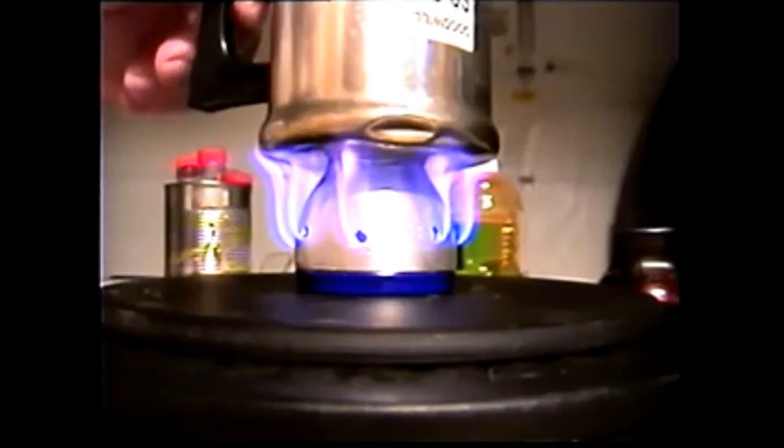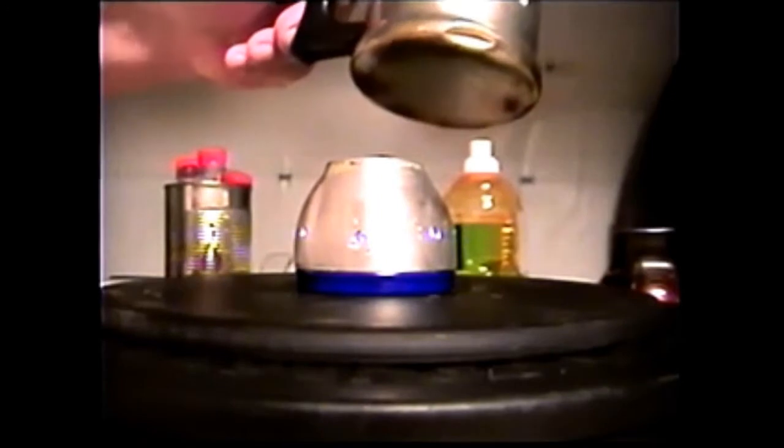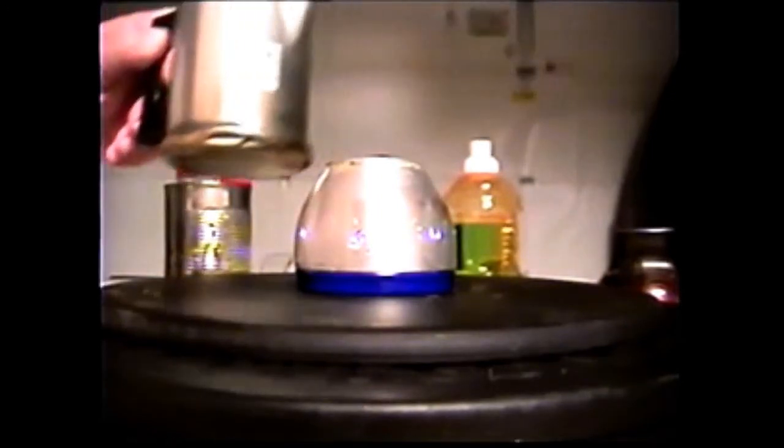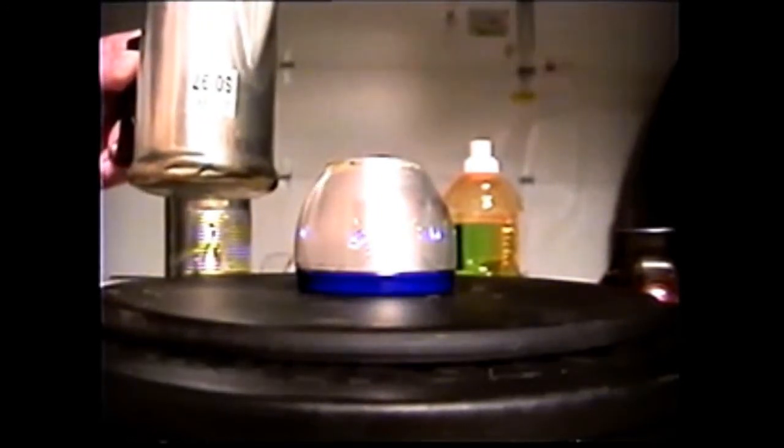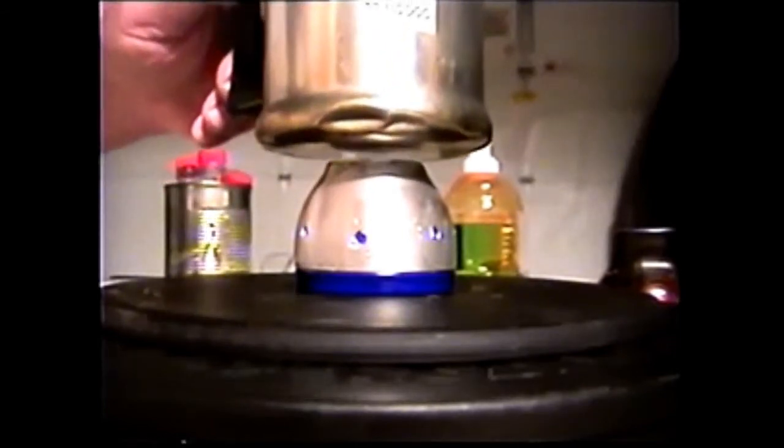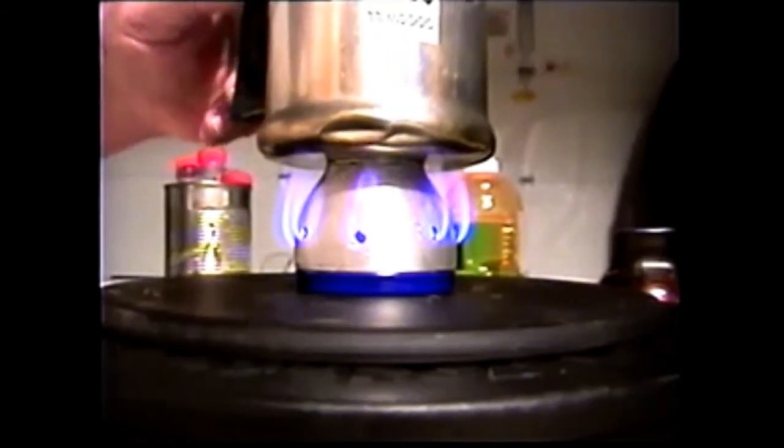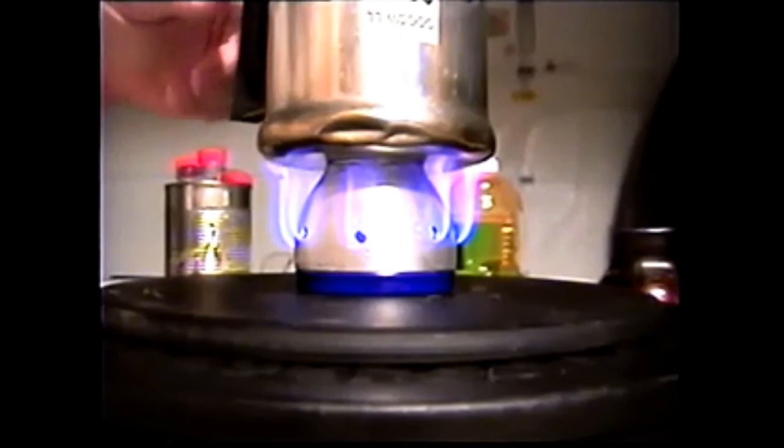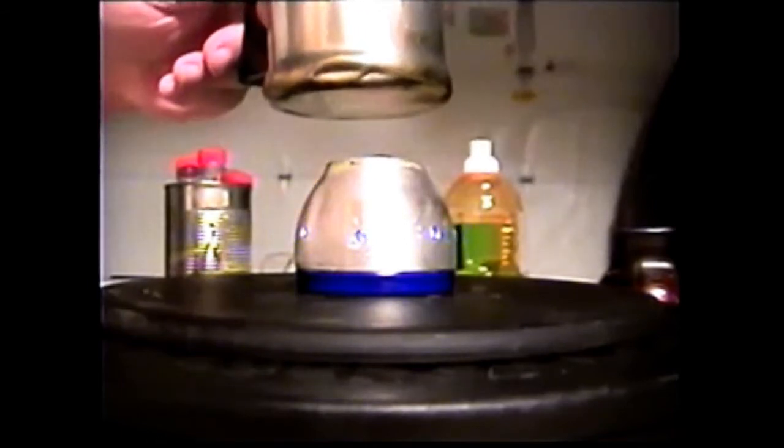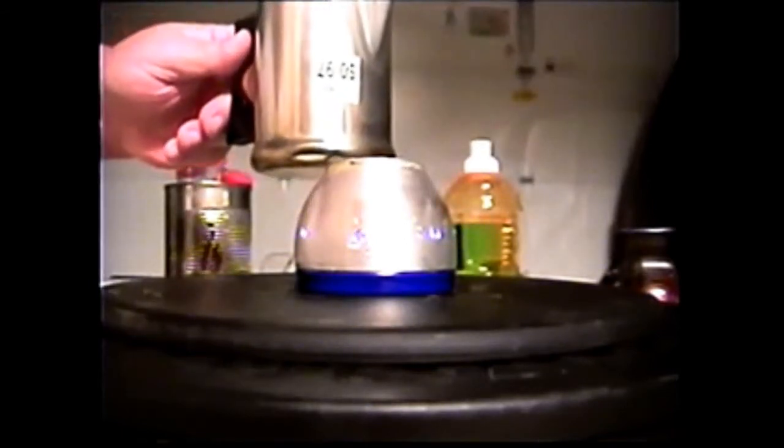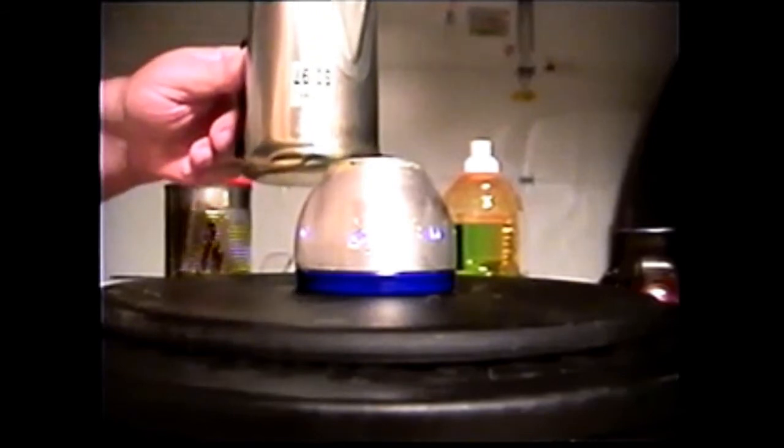Let's see if we get those vapors on the bottom of the pot again. Oh, the stove just about goes out. Oh, that's different. The other stove, when I lifted the pot off, it would flame up. This one doesn't seem to be. It's just making little flames on the inside of the holes.